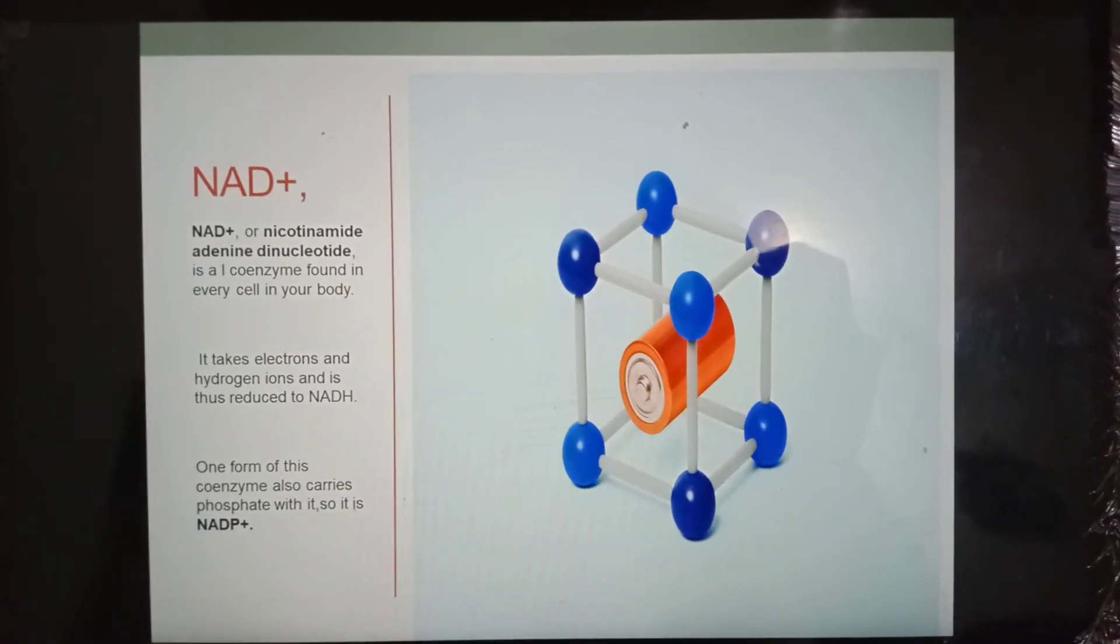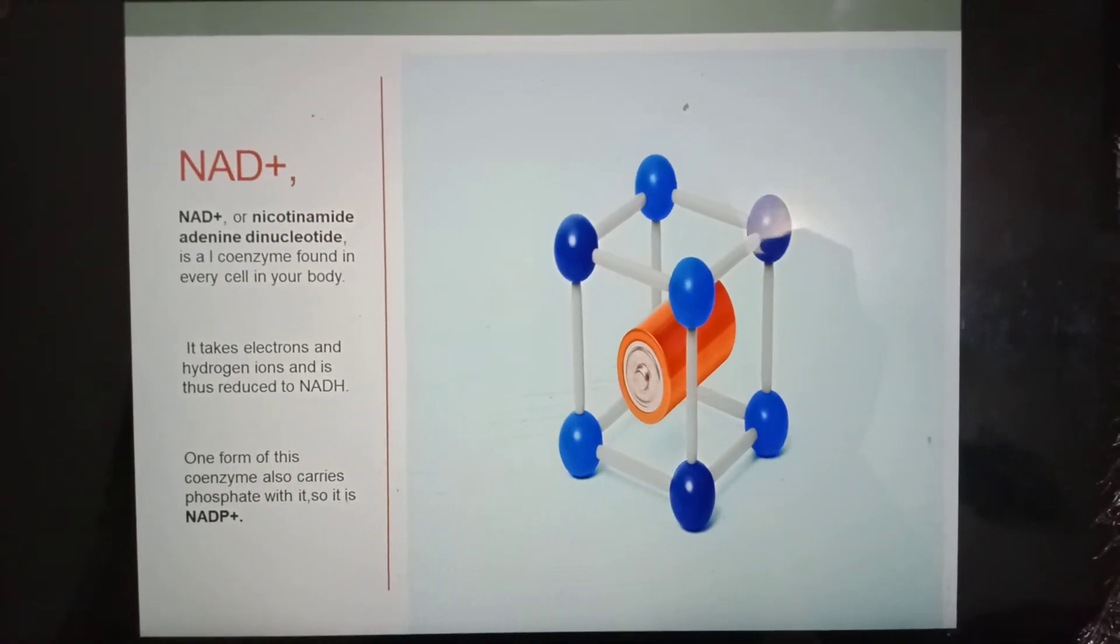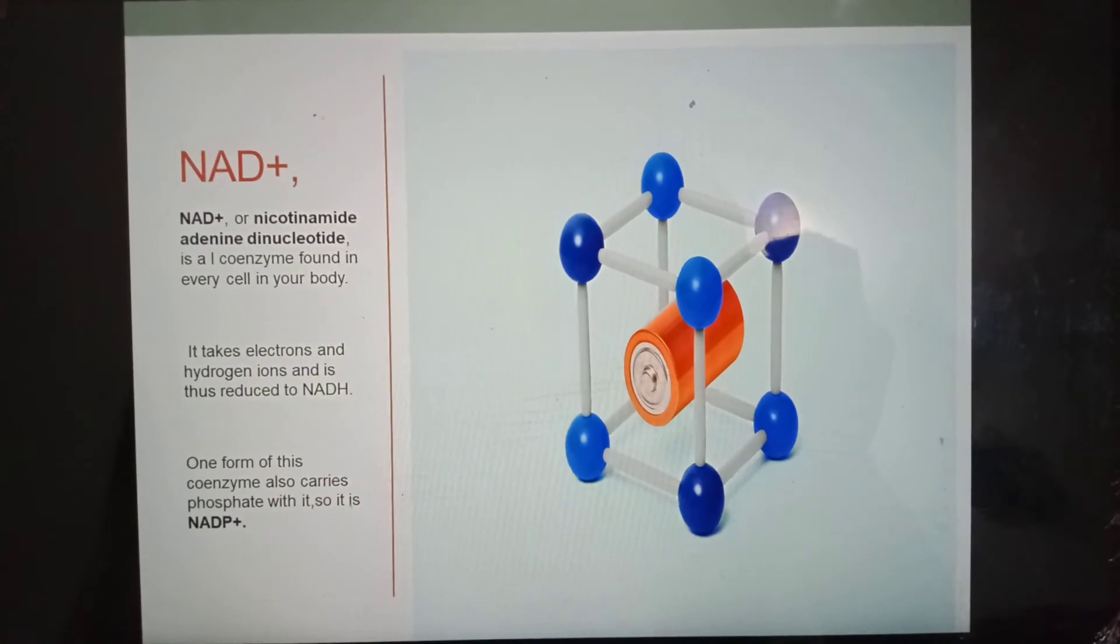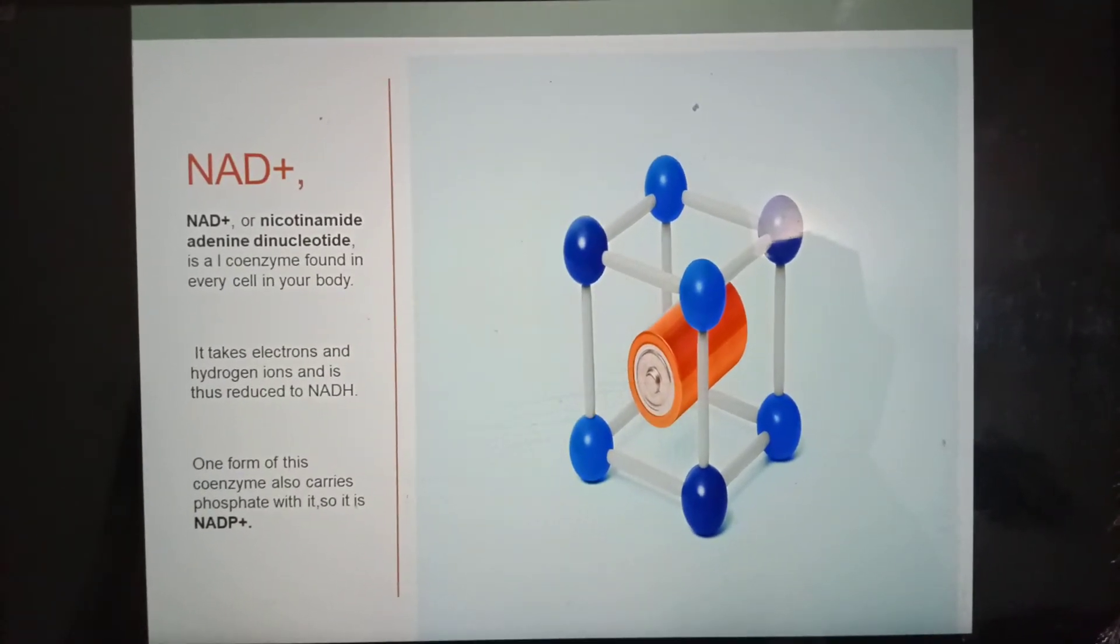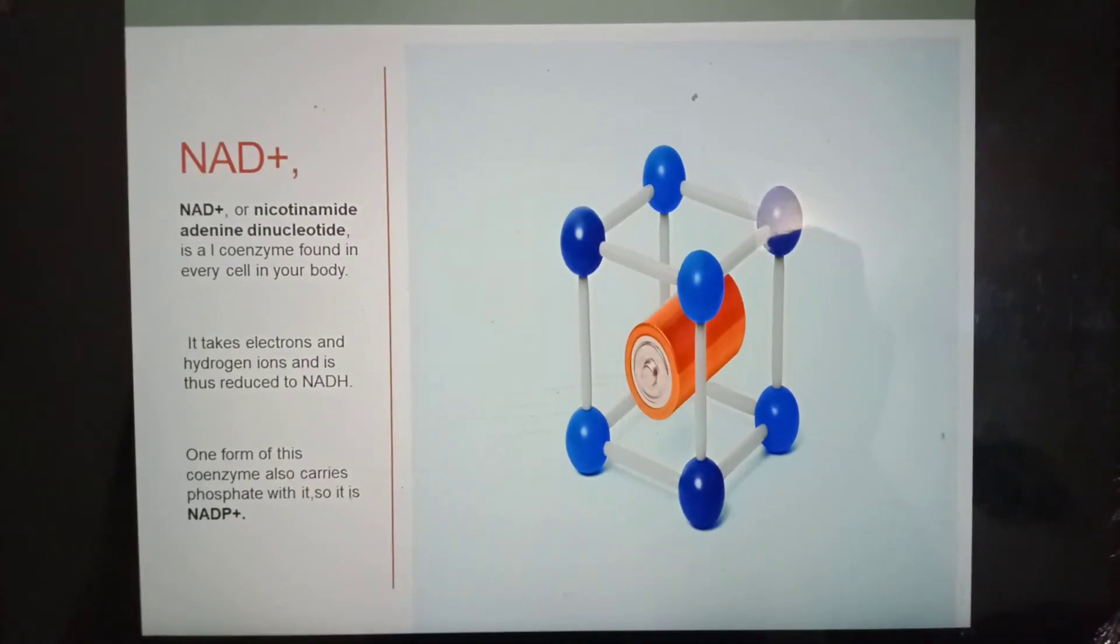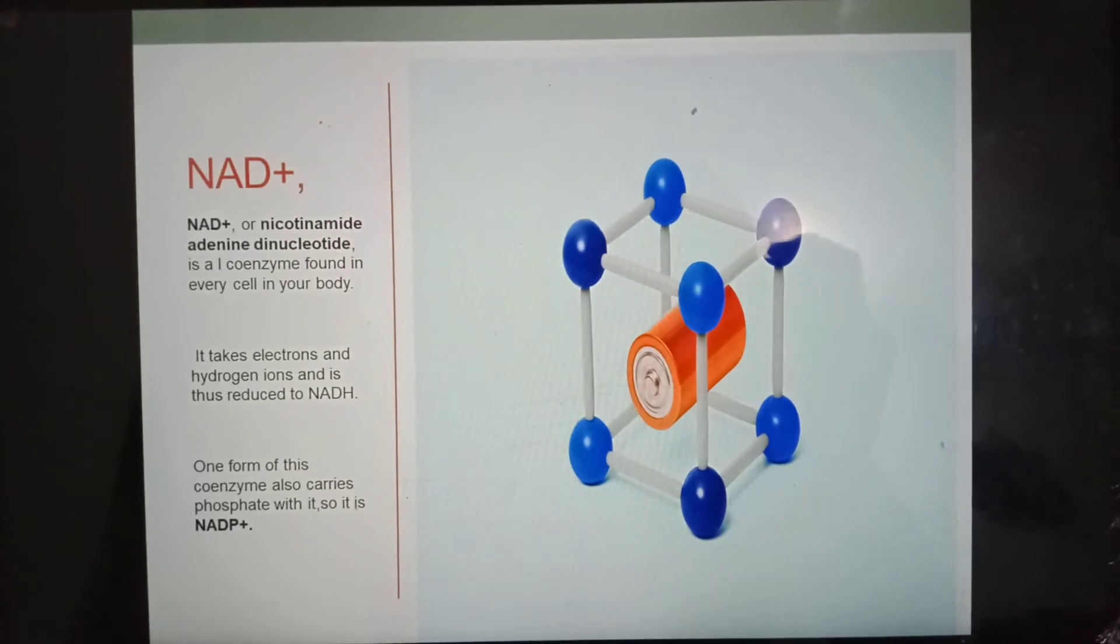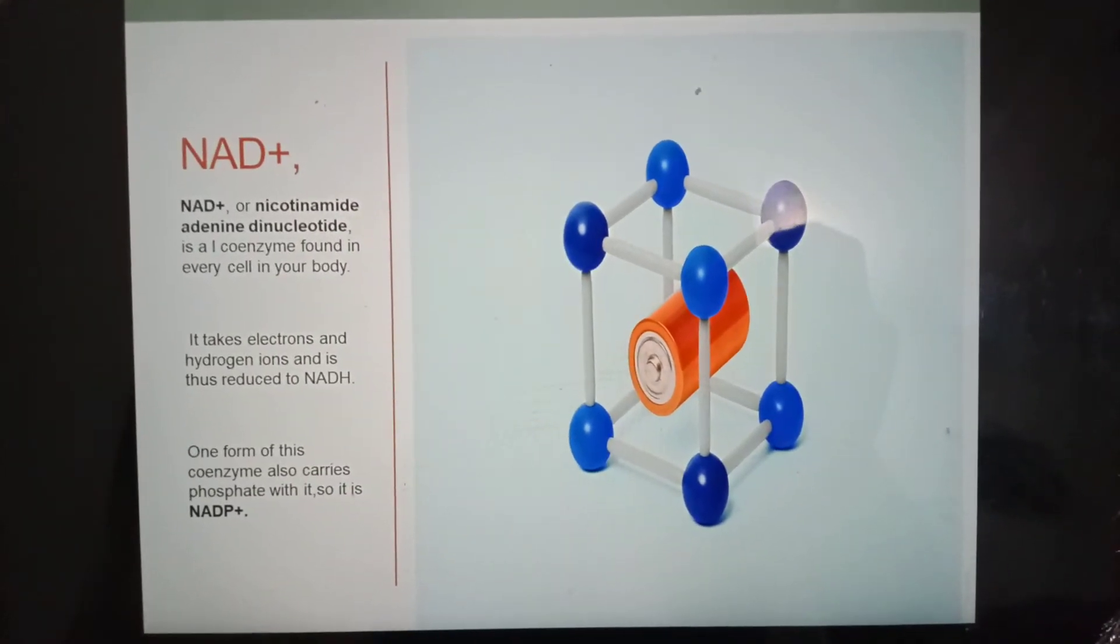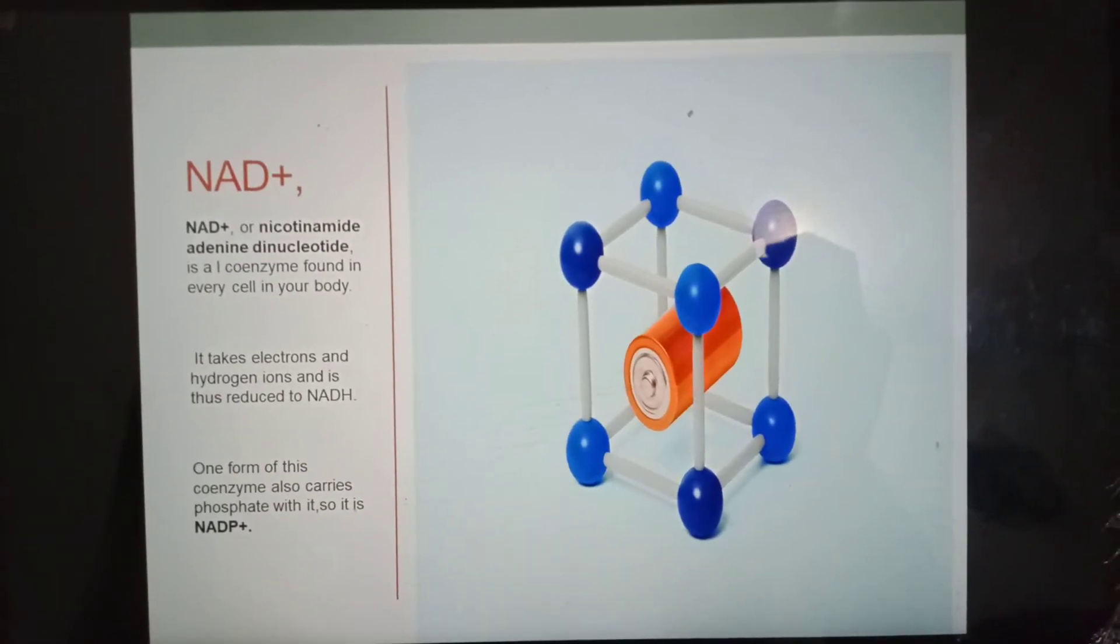Now I am going to discuss NADP+. NADP+ or nicotinamide adenine dinucleotide phosphate is a coenzyme found in every cell in your body. It takes electrons and hydrogen ions and is thus reduced to NADPH. This form of the coenzyme carries phosphate with it.